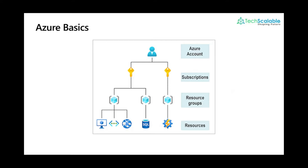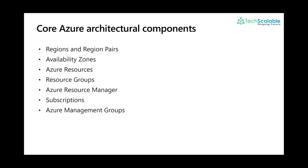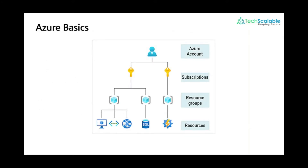For those who were in the last session, you'll notice a couple of slides will overlap with what we covered previously — things like core Azure architecture components: region pairs, availability zones, resource groups, and so forth. I'll cover these basics for newcomers, and then once we're done with the fundamentals we'll focus on new topics aligned with AZ-104. Let's get started.